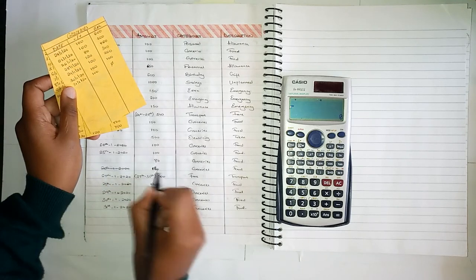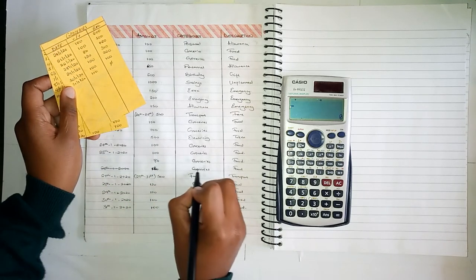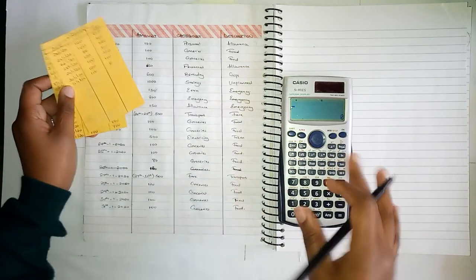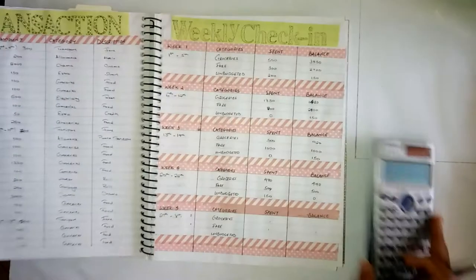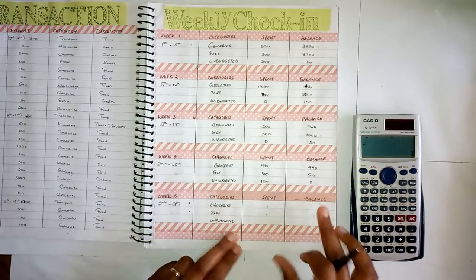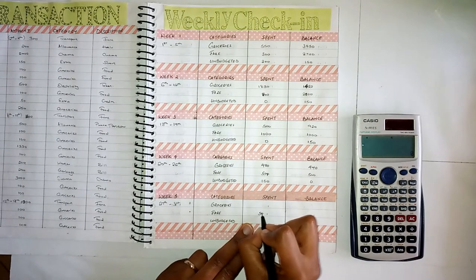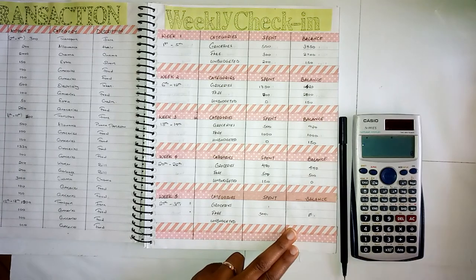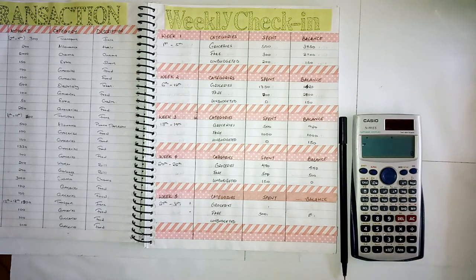So this whole transaction over here is not supposed to be there. I'll just go ahead and cancel it out, and then I'll write it out later. I'll start with my fare, which is 500, and today I have spent 500.